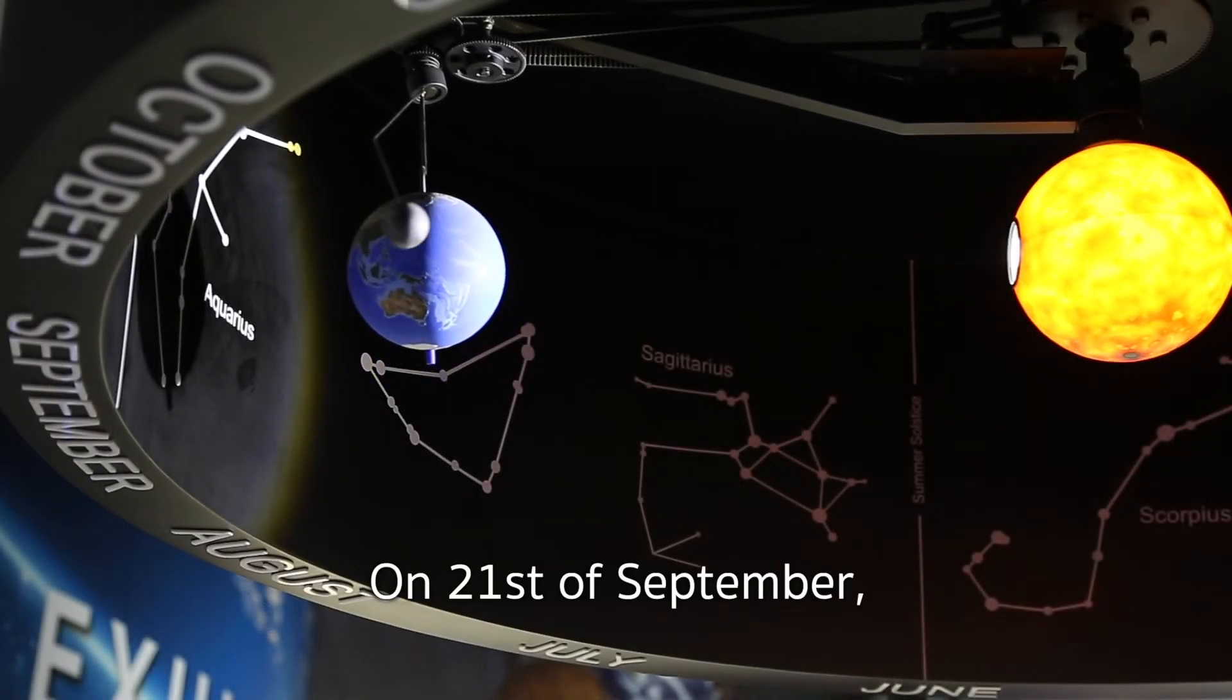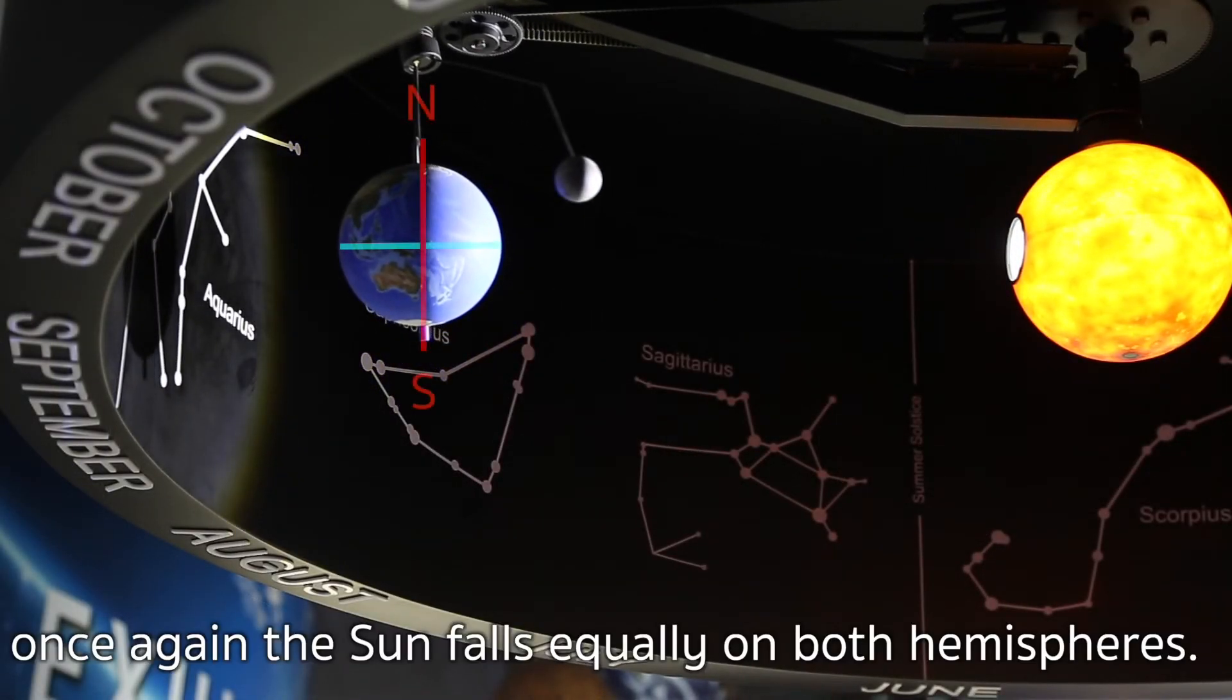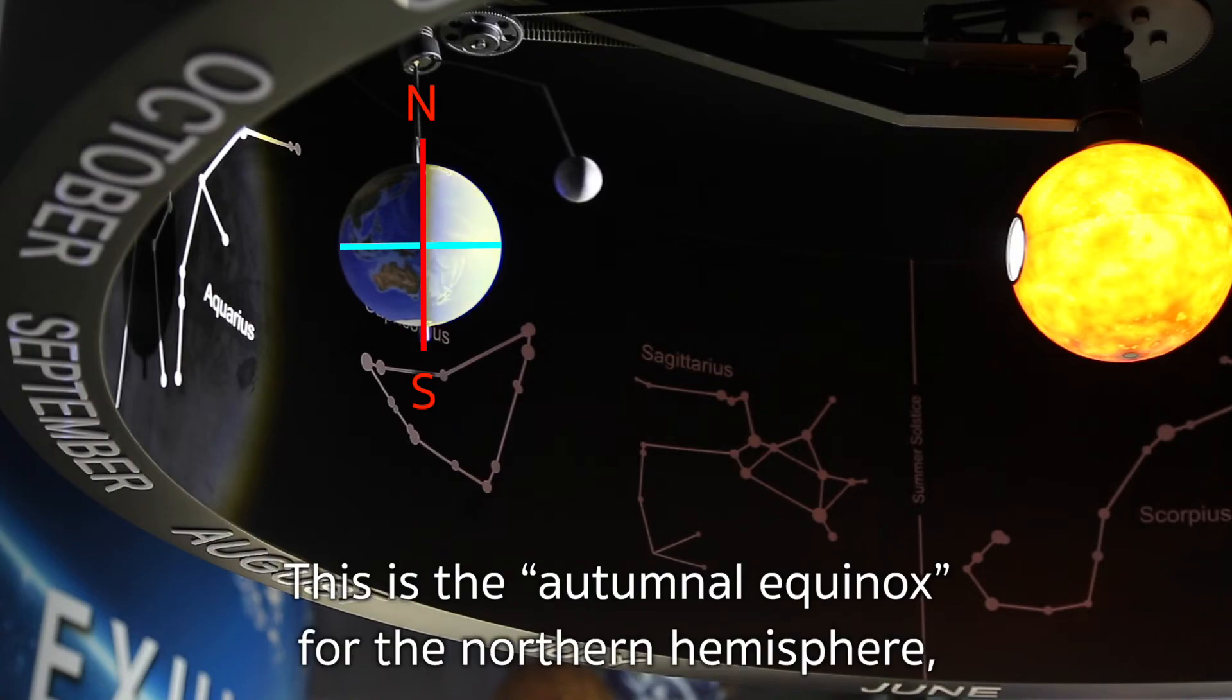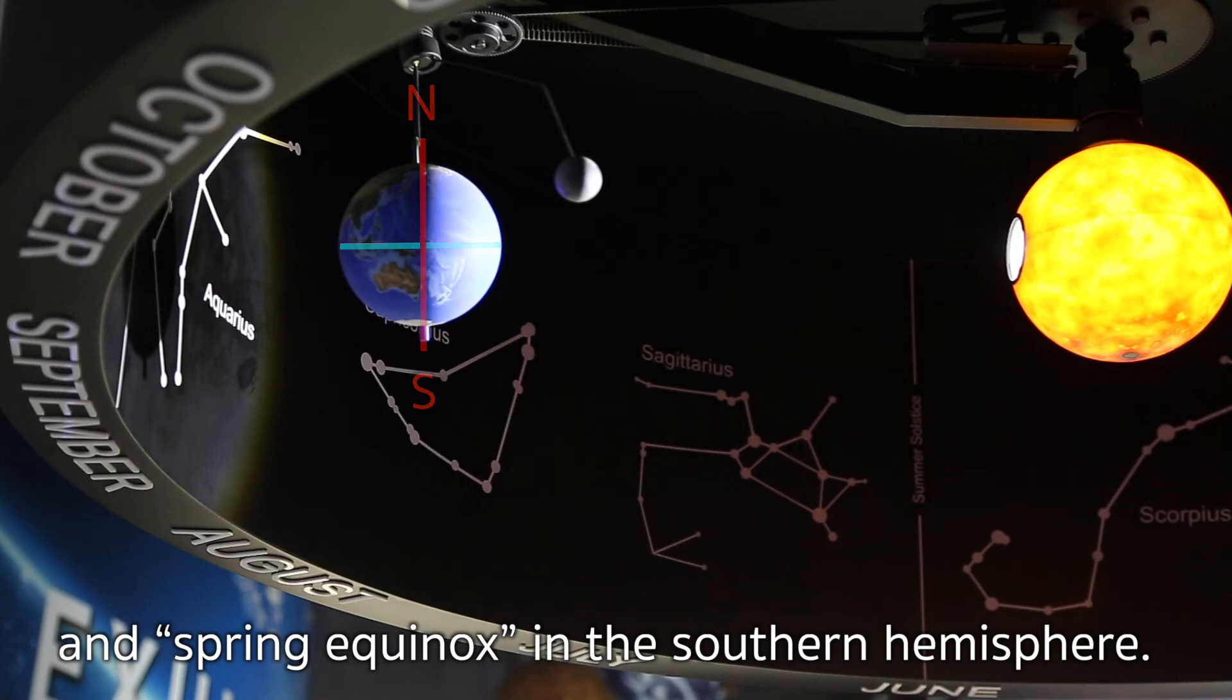On 21st of September, once again, the Sun falls equally on both hemispheres. This is the autumnal equinox for the Northern Hemisphere and spring equinox in the Southern Hemisphere.